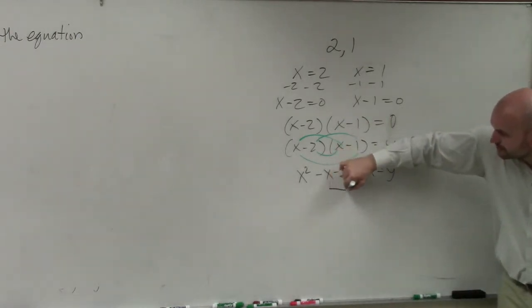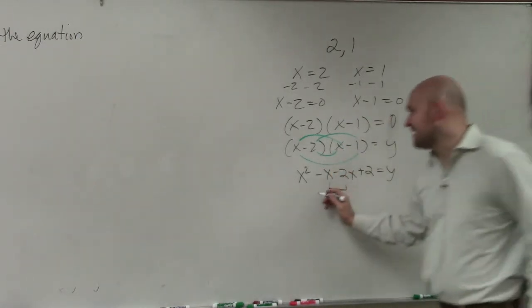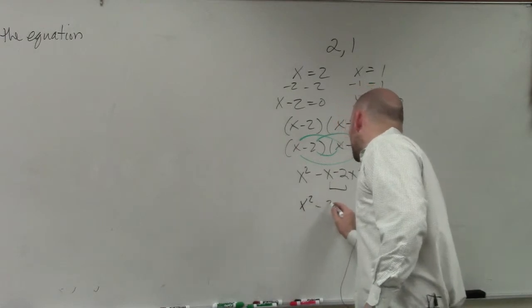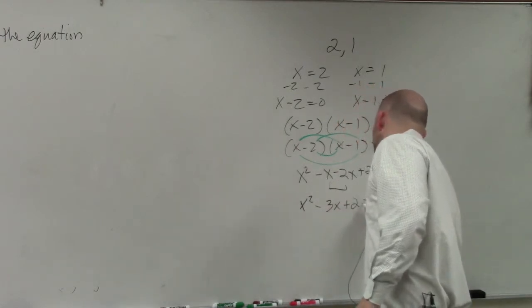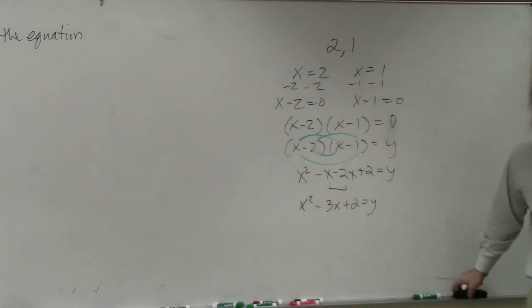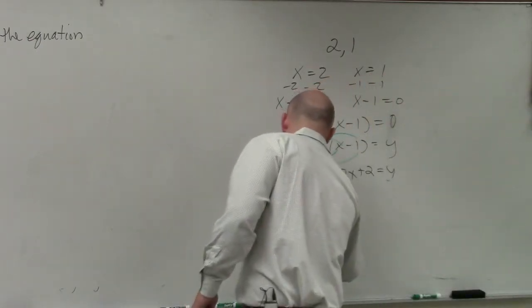Now I have like terms, so I combine them. So my final answer is x squared minus 3x plus 2 equals y. However, we don't really like to write the y at the end. So I'll say y equals.